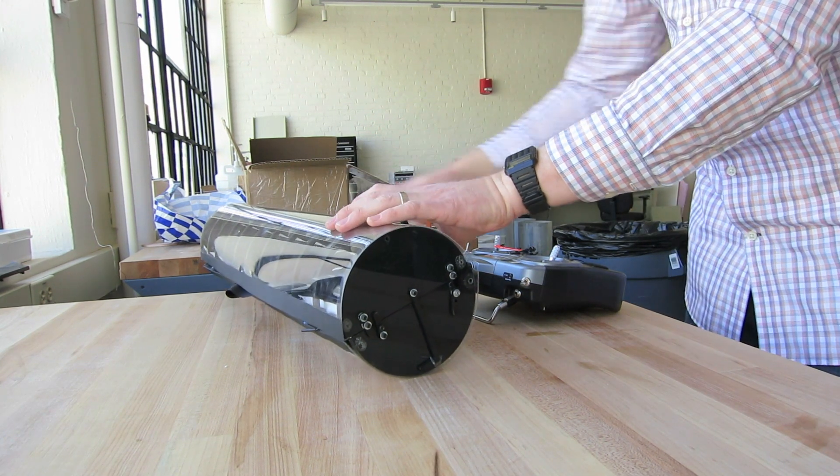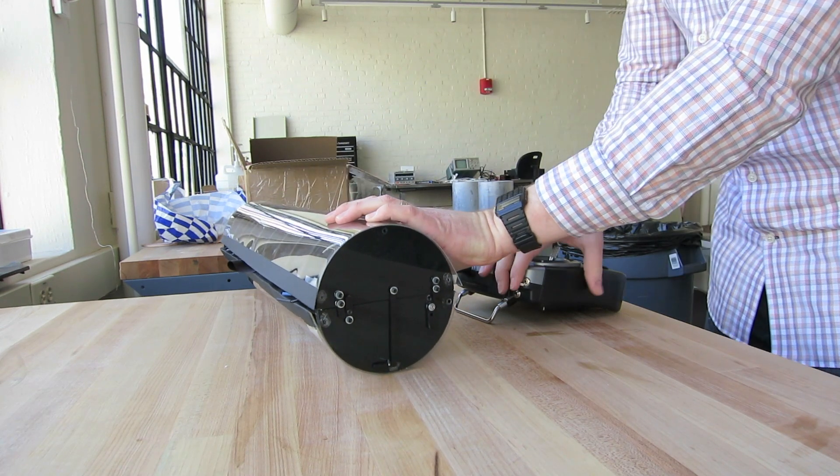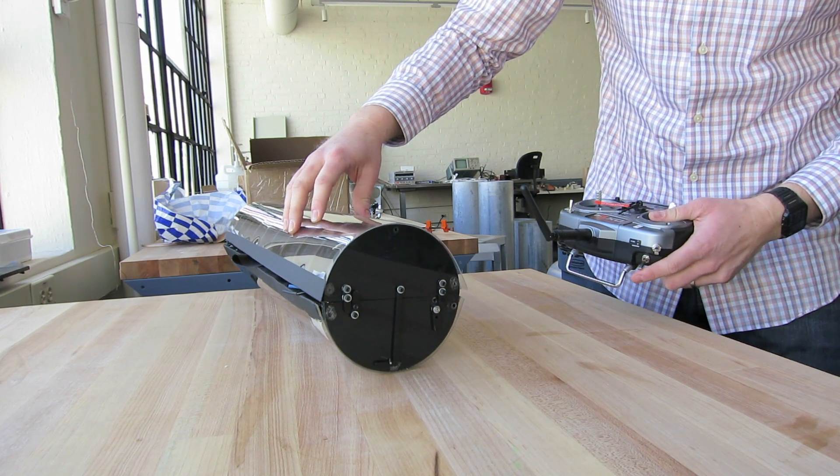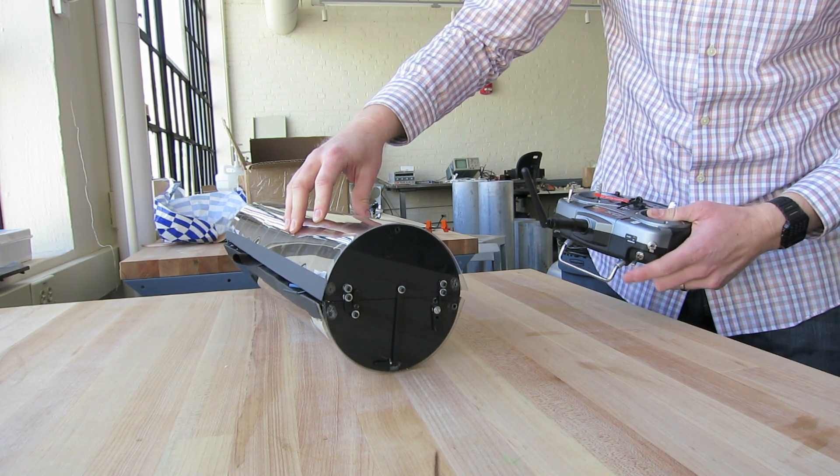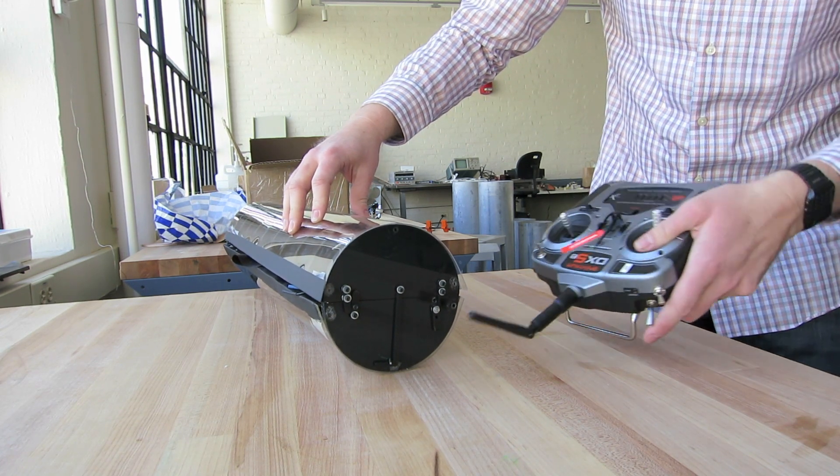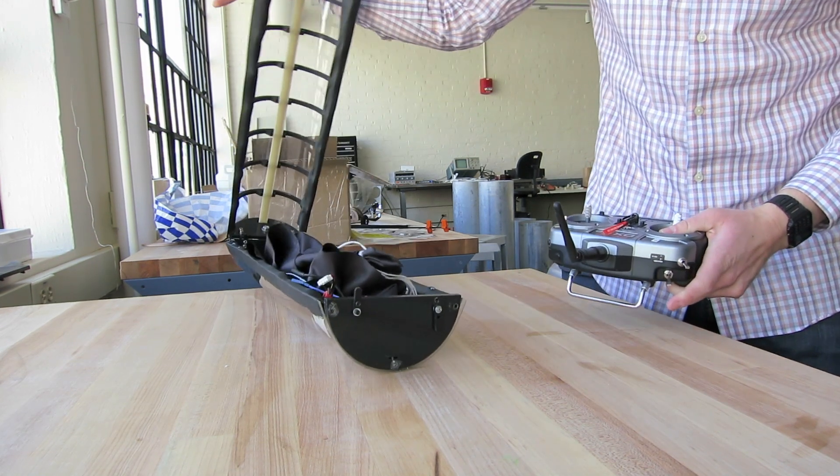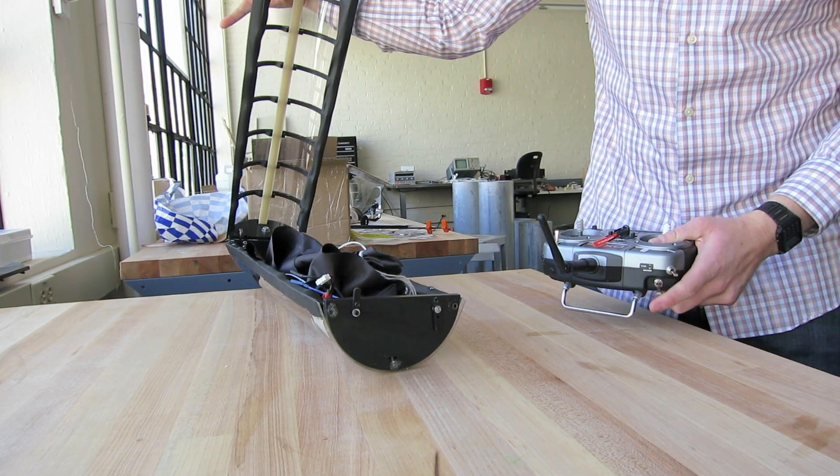The actual opening mechanism is actuated using this radio. It's wireless. You can see here that when I press this trigger, the servo moves the rod back and then it opens. So that's pretty much it. That's how it works.